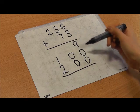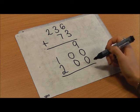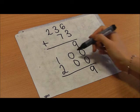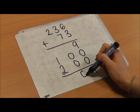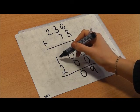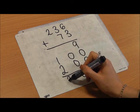9 add 0 is 9. Nothing and nothing is nothing. 1 and 2 is 3.